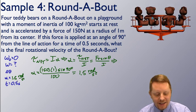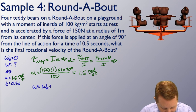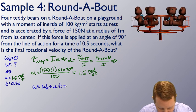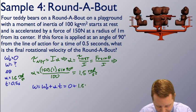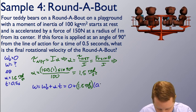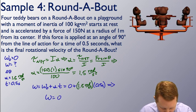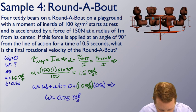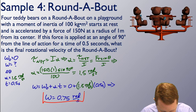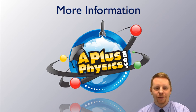Now using kinematics to find the final angular velocity: final angular velocity equals initial angular velocity plus alpha times time, which is 0 plus 1.5 times 0.5 seconds, giving a final angular velocity of 0.75 radians per second. Hopefully that gives you a good start on rotational dynamics, moment of inertia, and Newton's second law for rotation. For more help, check out aplusphysics.com. Thanks everyone and make it a great day.